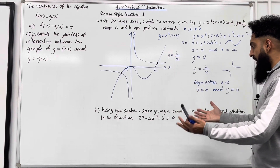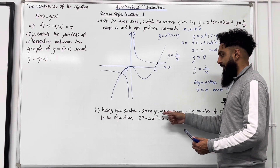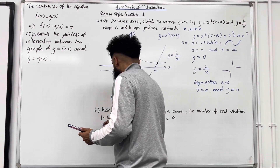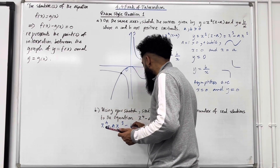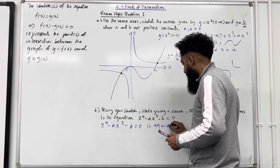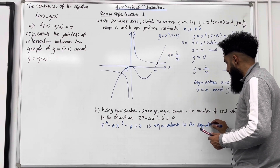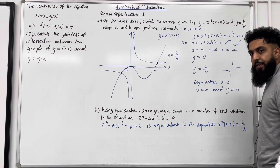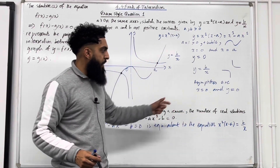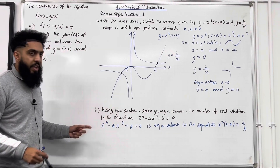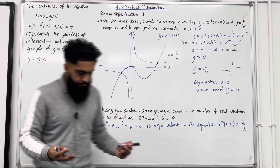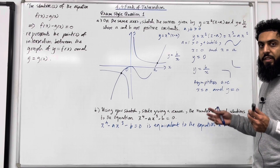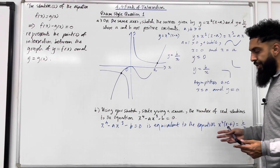Part B: using your sketch, state giving a reason the number of real solutions to the equation x⁴ − ax³ − b = 0. We notice that x⁴ − ax³ − b = 0 is equivalent to the equation x²(x − a) = b/x. If I multiply both sides by x and then rearrange, I get precisely this equation. So these two equations are equivalent. The number of real solutions depends on the points of intersection, and we have two points of intersection, hence there are two real solutions.